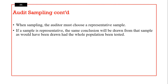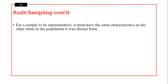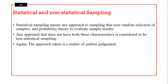When sampling, the auditor must choose a representative sample — the higher the sample size, the lower the sampling risk. If a sample is representative, the same conclusion will be drawn from that sample as would have been drawn had the whole population been tested. For a sample to be representative, it should have the same characteristics as the entire population. This requires experience to arrive at a meaningful conclusion.